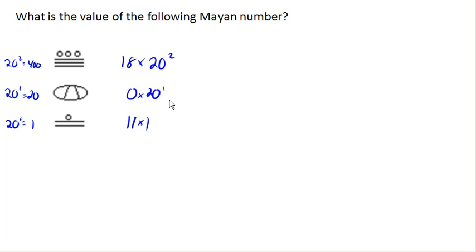And if we add all those up, we end up with 7, 2, 1, 1. So 7,211 base 10 in our base 10 system.